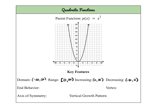For the end behavior, you can see that on both sides our graph is going to point up. So as x approaches positive or negative infinity, f of x approaches positive infinity. And our vertex is (0, 0). The vertex of our parabola is going to be where our graph changes from decreasing to increasing or vice versa. These types of graphs we call parabolas.